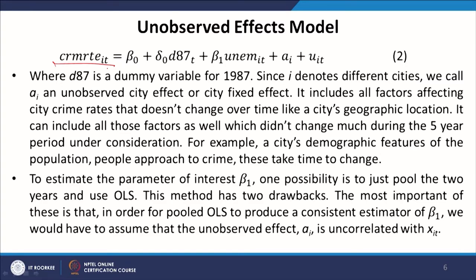A simple unobserved effects model for city crime rates for 1982 and 1987 can be written as: crime_rate_it = β₀ + δ₀·d87t + β₁·unemployment_it + a_i + u_it. Here i refers to a particular city and t refers to either 1982 or 1987. β₀ is the intercept parameter for the reference period — the first period — and the dummy d87t captures the second period. We are trying to find out whether unemployment impacts crime rates in a particular city, using data collected over two periods: 1982 and 1987.